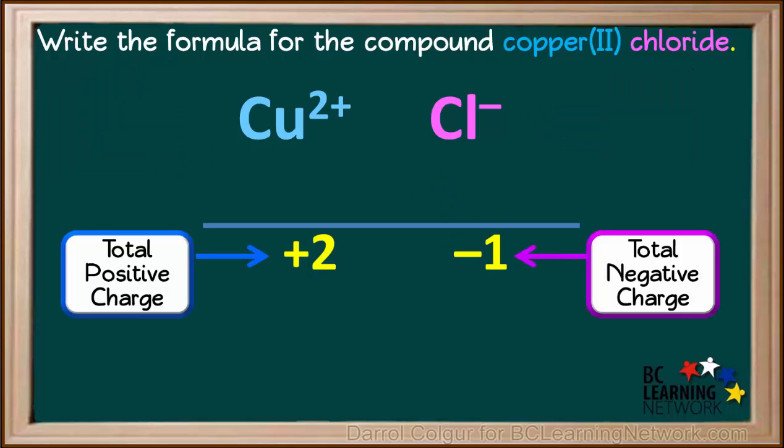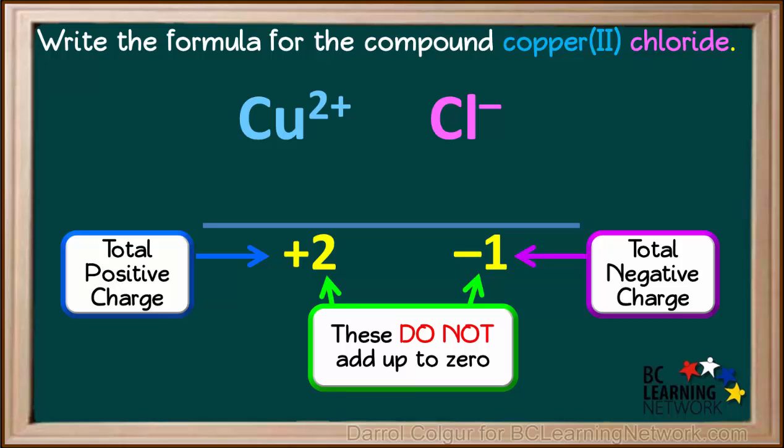If we have one copper 2 ion and one chloride ion, the positive and negative charges are not balanced. They don't add up to 0.